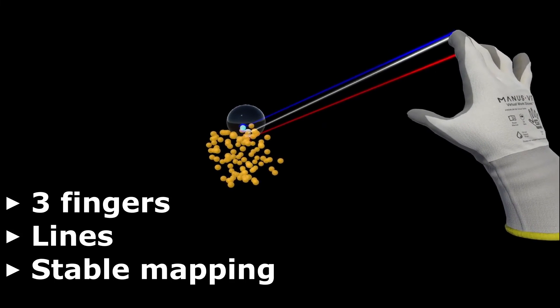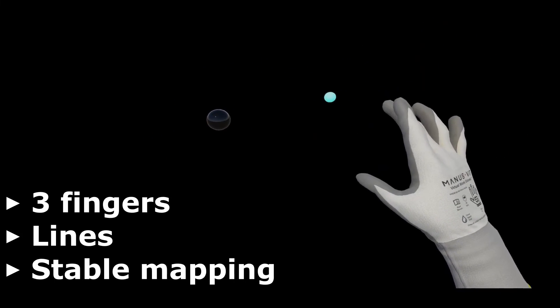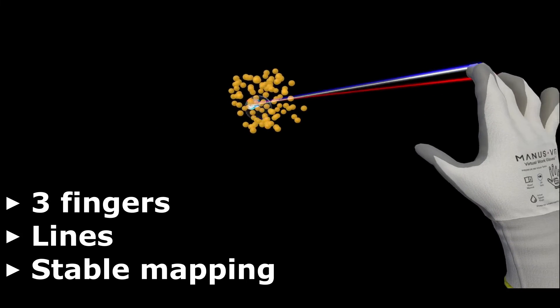Our design experiment reveals that multi-finger bubble is best used with three fingers, and with lines displaying the stable mapping between targets and fingers.